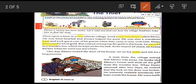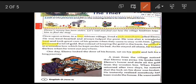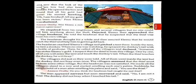A man from the village noticed that Elimu was away. He broke into Elimu's house and stole all the gold from the wooden box. When Elimu returned after two days, he noticed that the lock on his door was broken. He instantly realized somebody had been inside the house. He went inside and saw that the lock of the wooden box had also been broken. He opened the box and found that all his gold had gone. He started howling: 'Oh, I am finished! All my gold has been stolen!' Poor Elimu was shattered.